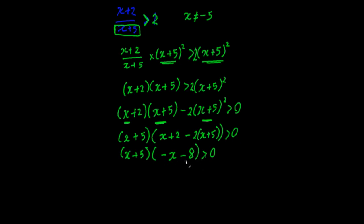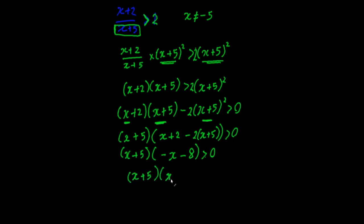Taking the minus out from the inner bracket gives (x plus 5) times minus(x plus 8) is greater than 0. Dividing both sides by minus 1 switches the inequality, so we end up with (x plus 5)(x plus 8) is less than 0.